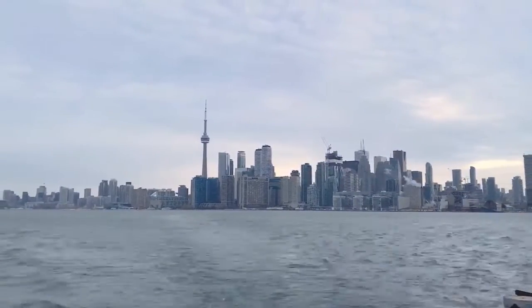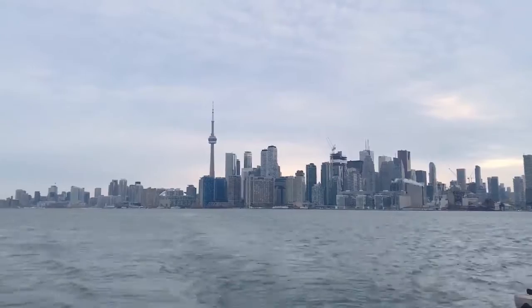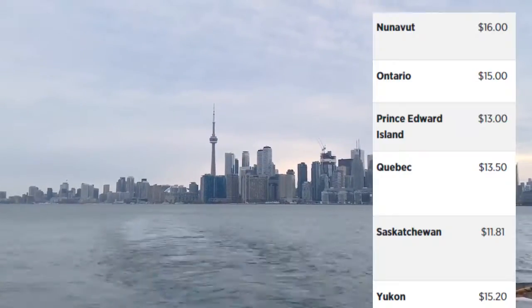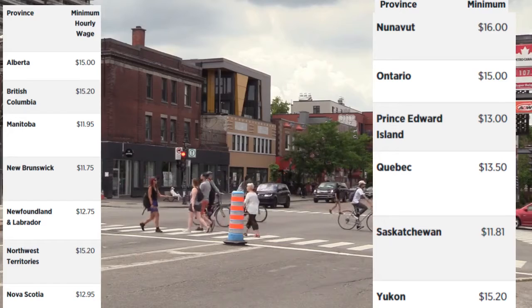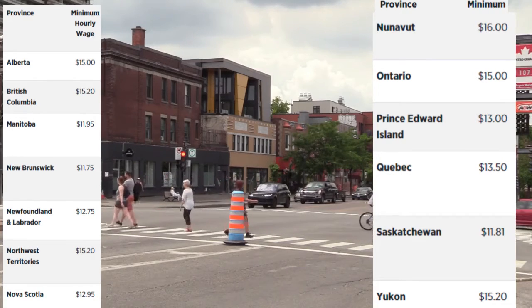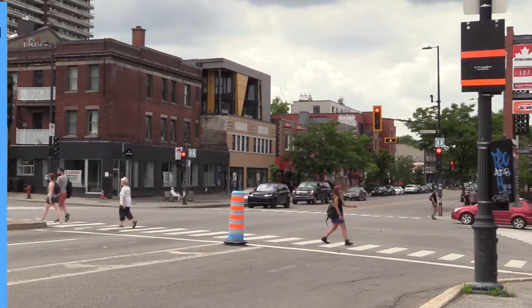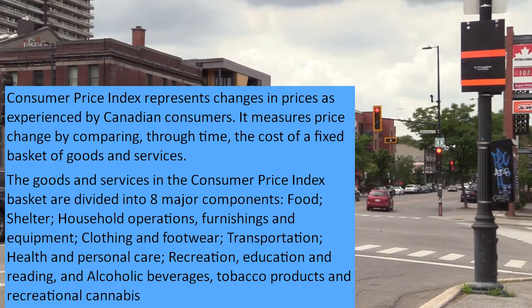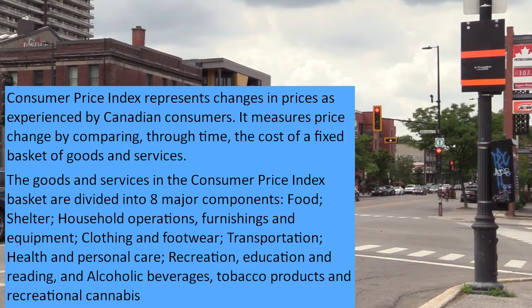Minimum wage is different in different provinces or territories of Canada, meaning they are not uniform. You can see the minimum wage with their province or territory on the screen. The reason behind different wages is the difference in their Consumer Price Index. Consumer Price Index represents changes in prices as experienced by Canadian consumers. It measures price change by comparing through time the cost of a fixed basket of goods and services.